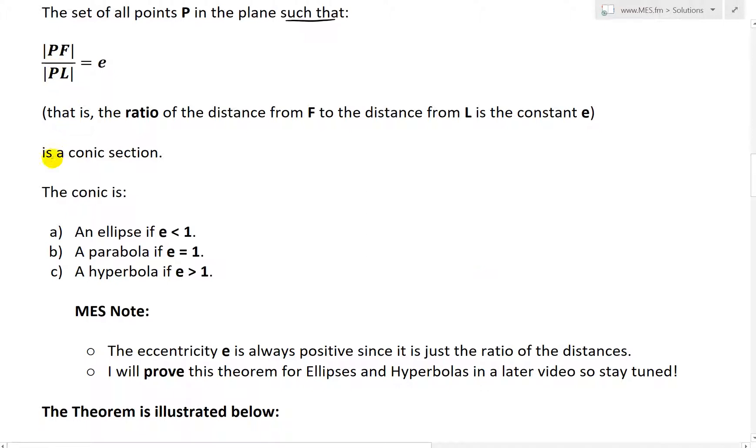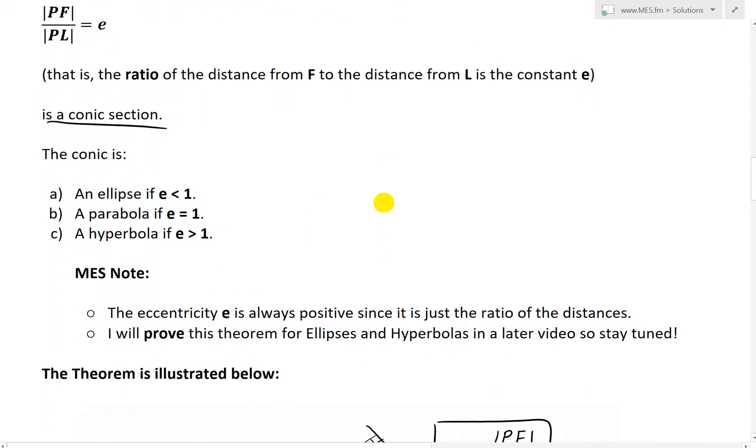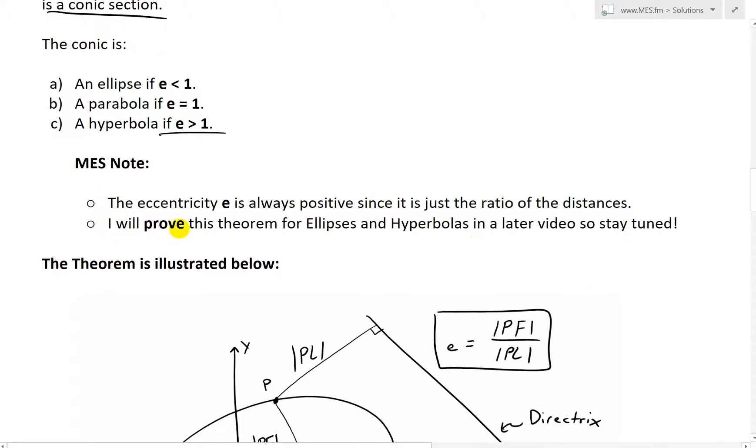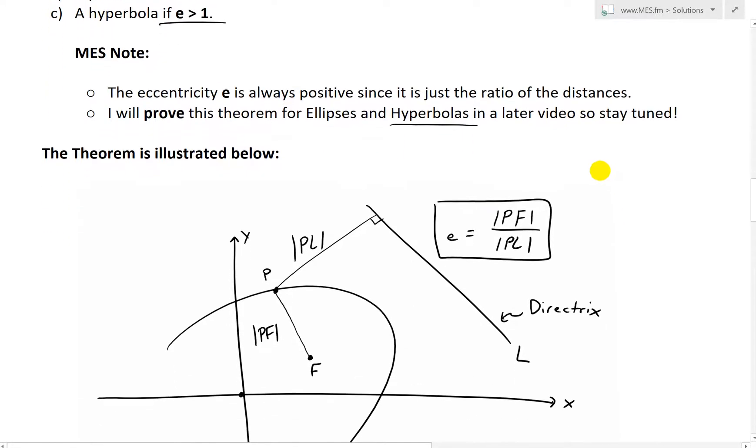So this is going to be a conic section. That's the theorem. And the conic is an ellipse if E is less than 1, a parabola if E is equal to 1, and a hyperbola if E is greater than 1. MES note, the eccentricity is always positive since it is just the ratio of the distances. And I'll prove this theorem for ellipses and hyperbolas in a later video, so stay tuned.